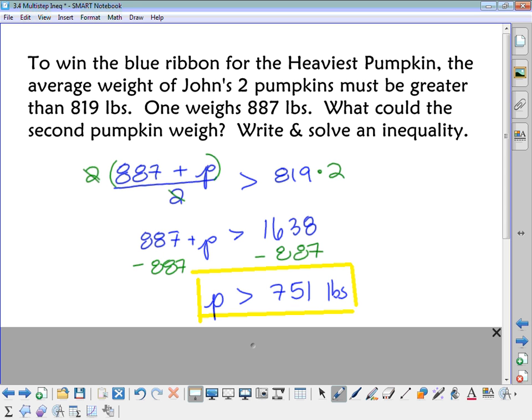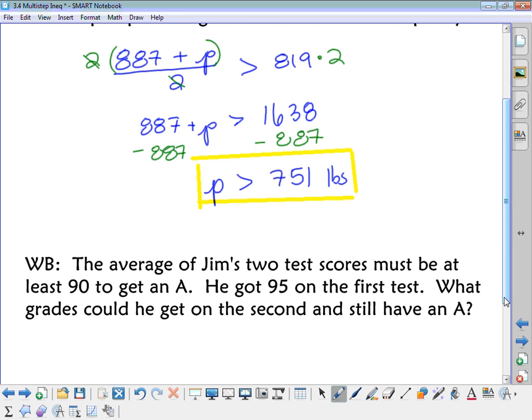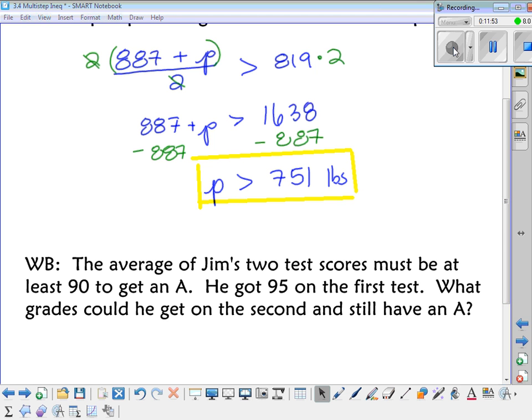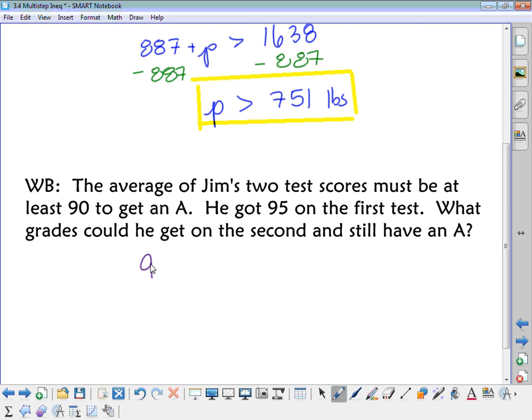Questions? All right, you guys have a similar one to do. You don't need to write the words down. Just figure out an inequality. So before you solve it, show me what your inequality would look like. Okay, so a couple of you had problems setting it up, but most of you had it right. He already got 95, plus he's going to get something else. Averaging them, we divide by 2. It has to be greater than or equal to 90. It's okay if it equals exactly 90. So that's why it's greater than or equal to.